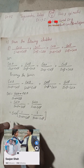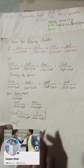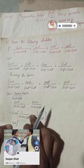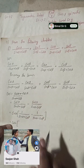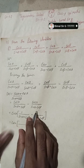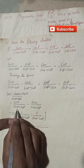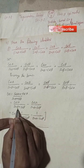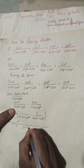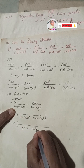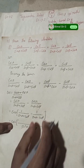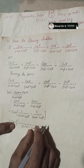We have taken cos alpha outside, so there is 1 minus 1 over each denominator. Now the denominators are of the form a plus b and a minus b where sin alpha is a and cos beta is b. Taking LCM, this gives cos alpha times the combined fraction over sin squared alpha minus cos squared beta.